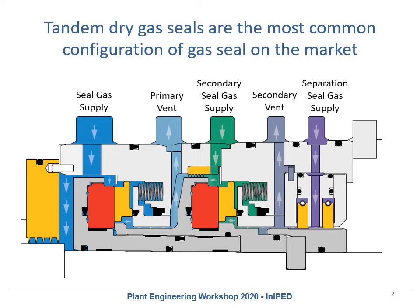One of the big things that API 692 did when it first came out is it standardized some of the vocabulary around dry gas seals. This is a technology that's been out there for 30 to 40 years and over time there's been a lot of linguistic drift over what people call things. For the purposes of this video I will be using the API 692 definitions.